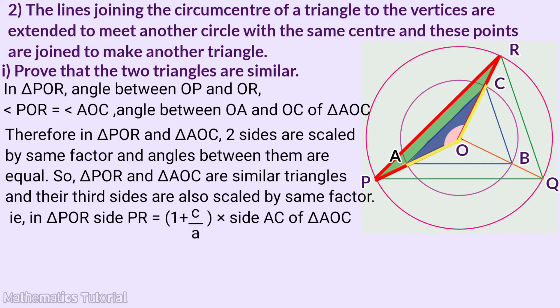Triangle POR side PR equals 1 plus C by A into side AC of triangle AOC. That is, PR is equal to 1 plus C by A into AC. This is equation 2.